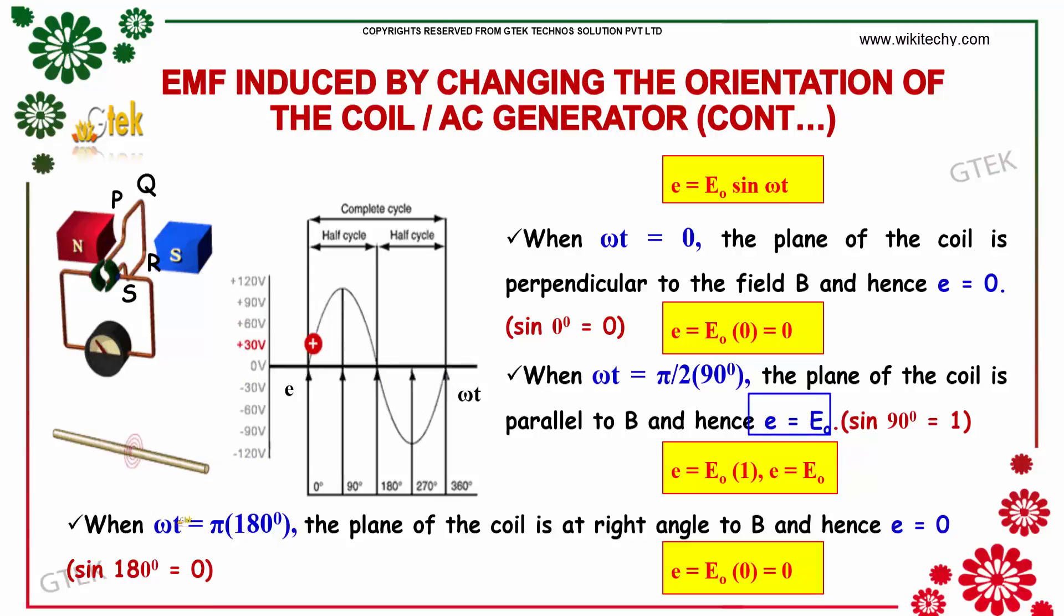If omega t equals 180 degrees, the plane of the coil is at right angle. Over here it's parallel, over here it's right angle. So E equals 0 since sin 180 degrees is 0. This is the equation you will get. You are able to see it here.